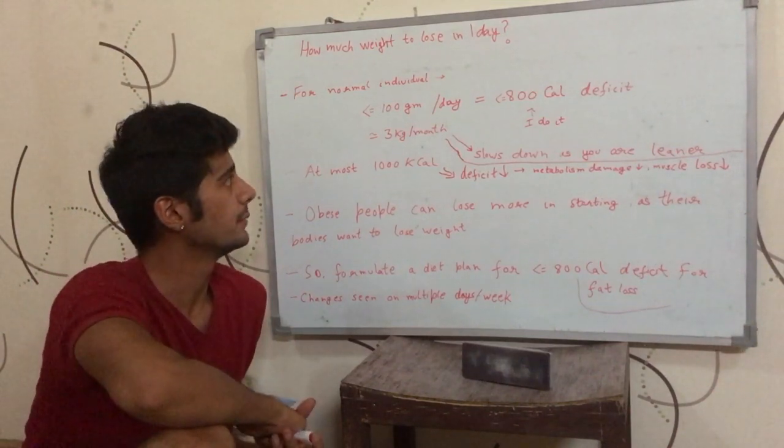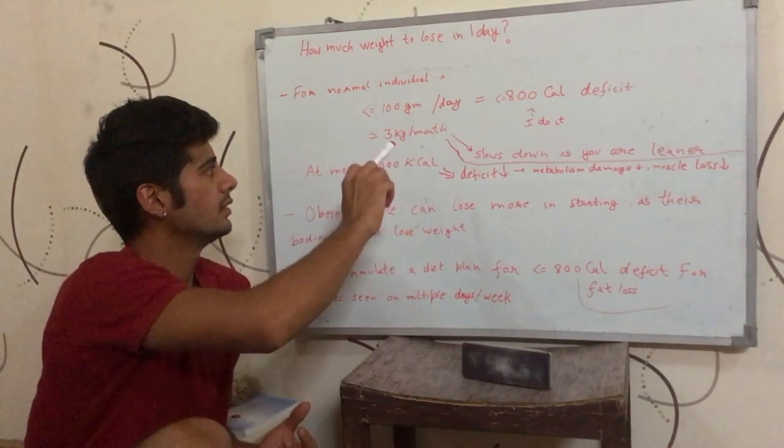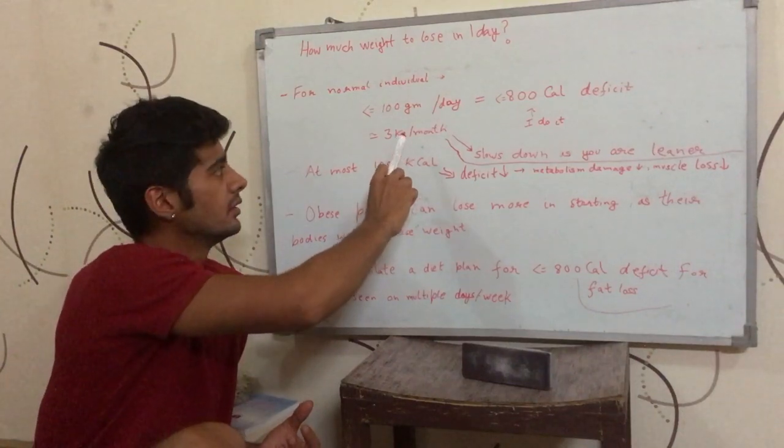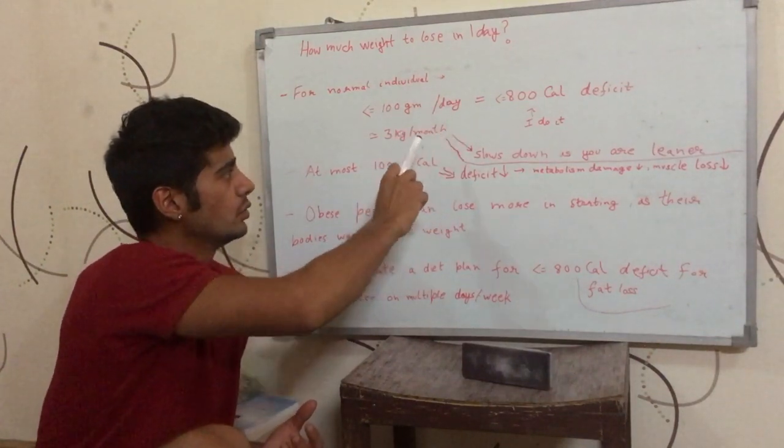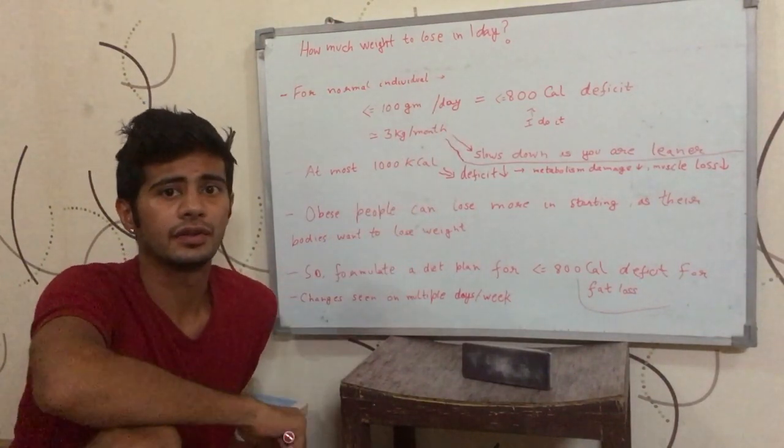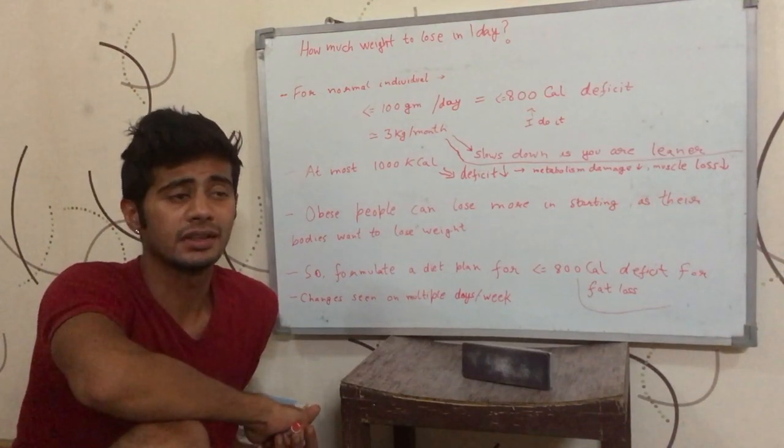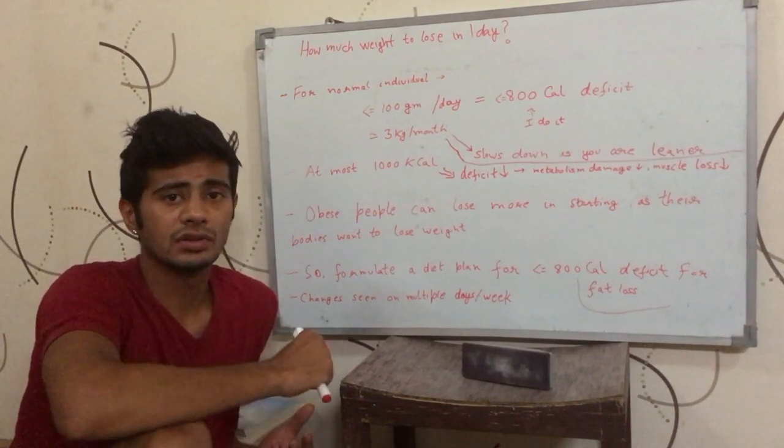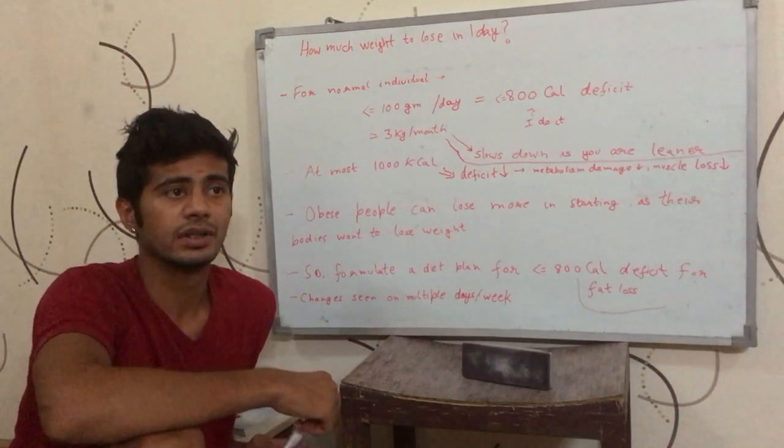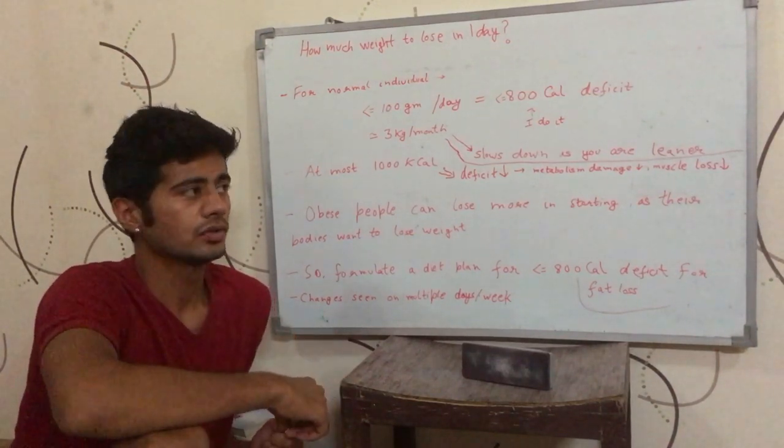Now let's say you are your normal individual, you have some fat on your body, just a normal case, not a very obese case. Then when you target this fat loss of 3 kilograms per month, once you start getting leaner, the speed with which you progress will go down.